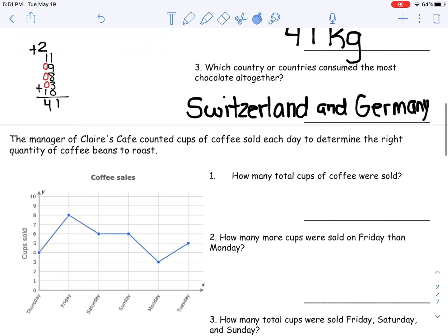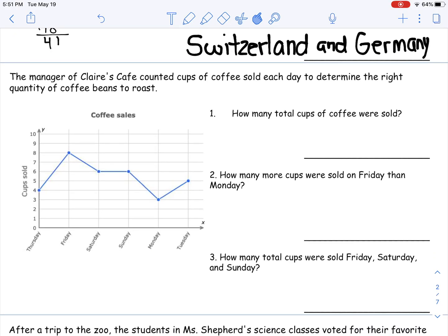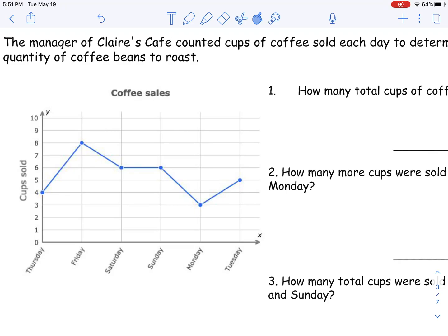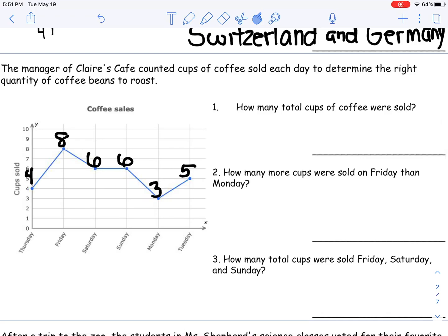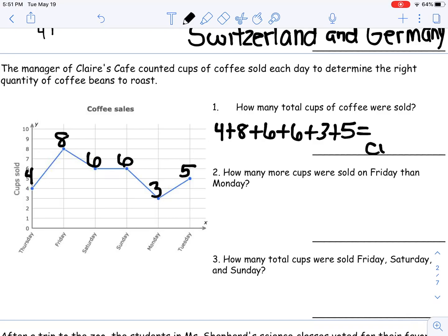So that is a table. On your independent practice, you're going to read a table. Here is what we would call our line plot. Remember the strategy I taught you when we first learned about this — go through and label all of your points so that you have them nice and easy to read. I label all of my points. We're talking about Claire's Cafe and the cups of coffee they're selling. How many total cups of coffee were sold? If I'm doing total, I have to add them all up: 4 plus 8 plus 6 plus 6 plus 6 plus 3 plus 5. My answer is going to be in cups.